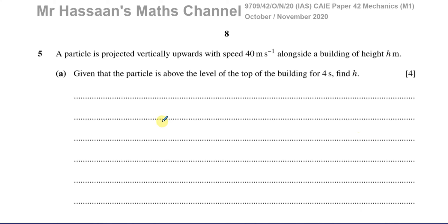It says a particle is projected vertically upwards with a speed of 40 meters per second alongside a building of height h meters. Given that the particle is above the level of the top of the building for 4 seconds, find h, the height of the building.